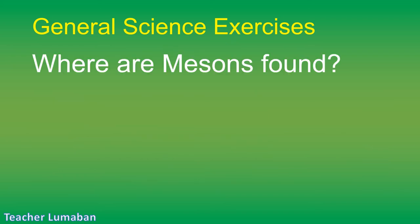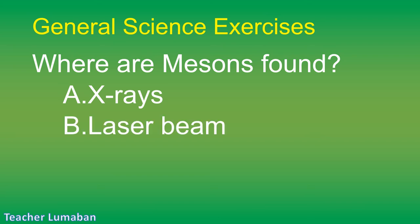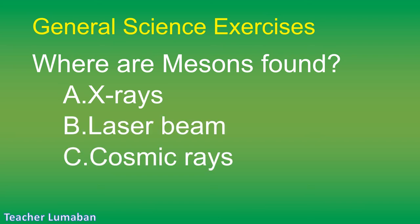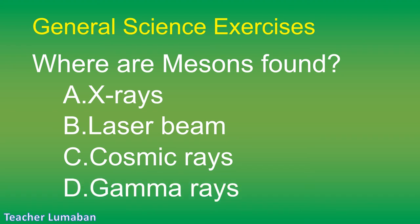Where are mesons found? Letter A: X-rays. Letter B: laser beam. Letter C: cosmic rays. Letter D: gamma rays.